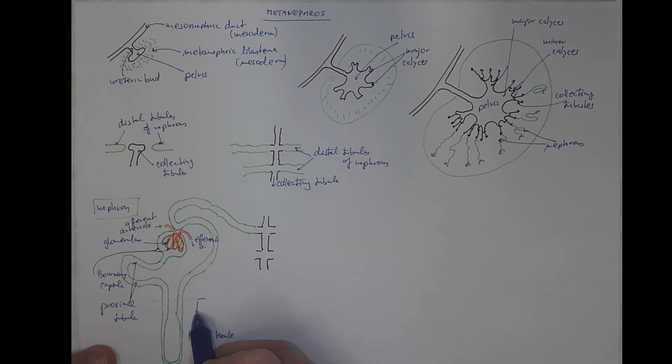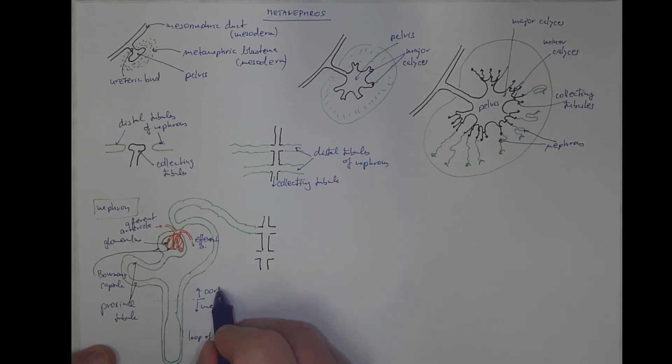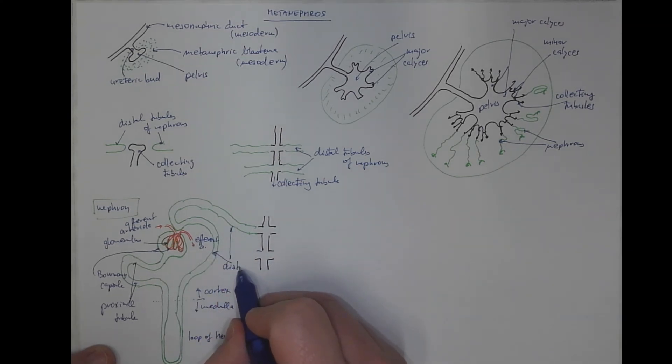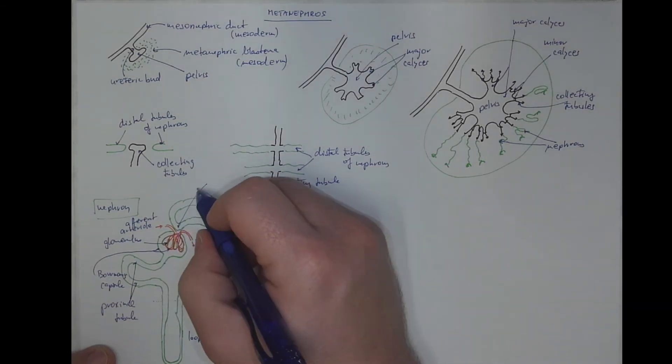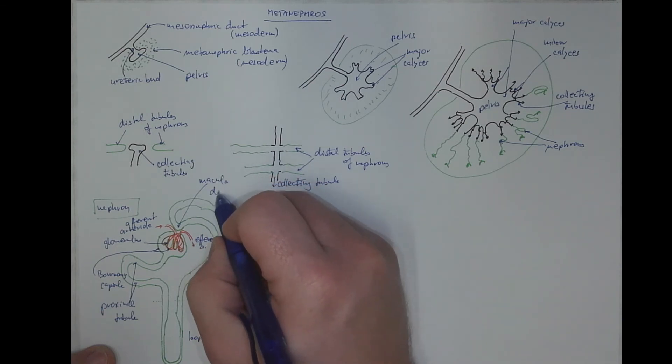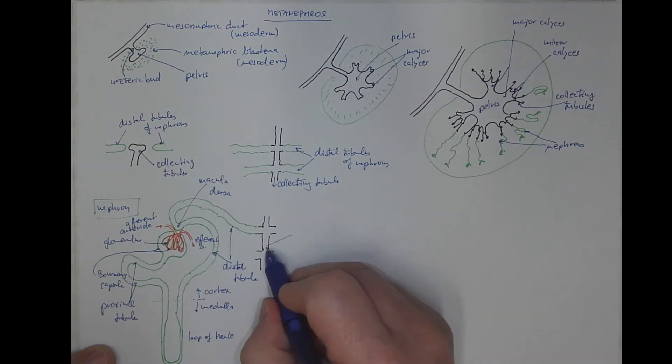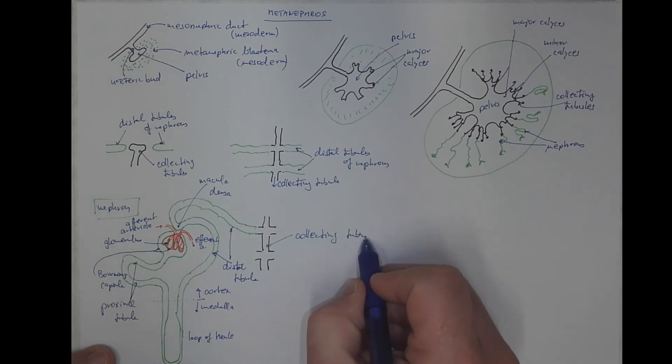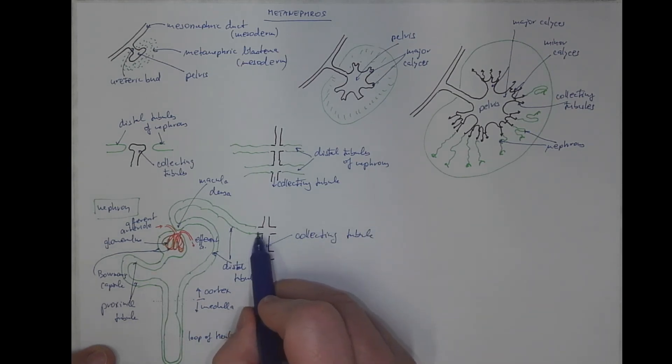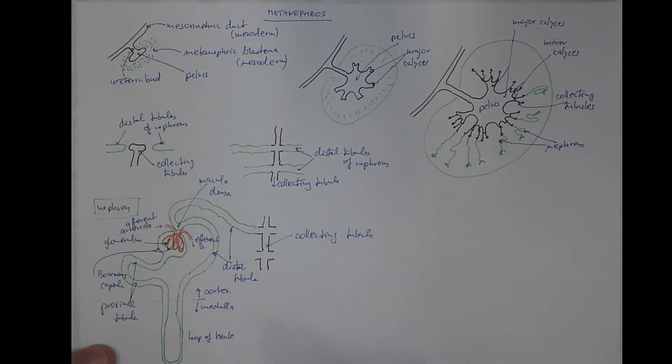This would be the medulla, this would be the cortex with the distal tubule, the macula densa, and the collecting tubule. This junction needs to originate properly for the kidneys to work.